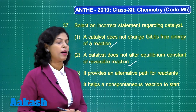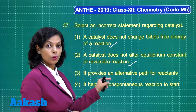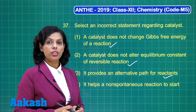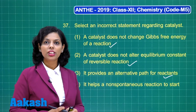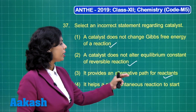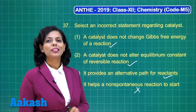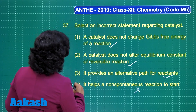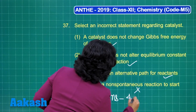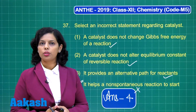It provides an alternative path for the reactant by lowering the activation energy — this statement is also correct. Next: it helps a non-spontaneous reaction to start. A catalyst neither starts a reaction nor initiates a reaction, so you cannot say it helps a non-spontaneous reaction to start. This is a wrong statement, and since it is wrong, it becomes our correct answer — that is option 4.